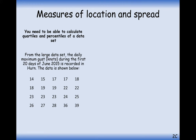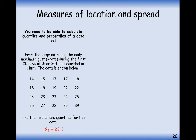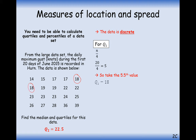Let's look at some questions with discrete data. This data comes from the large data set — the daily maximum gust in knots during the first 20 days of June 2015 recorded in Hearn. We're asked to find the median and the quartiles. For the median, it's N plus one divided by two, so 20 plus one divided by two is 10.5. Counting the 10th and 11th values, halfway between 22 and 23 is 22.5. For the lower quartile, N divided by four is five, so it's in between the 5th and 6th data points — in between 18 and 18 — so the lower quartile is 18.